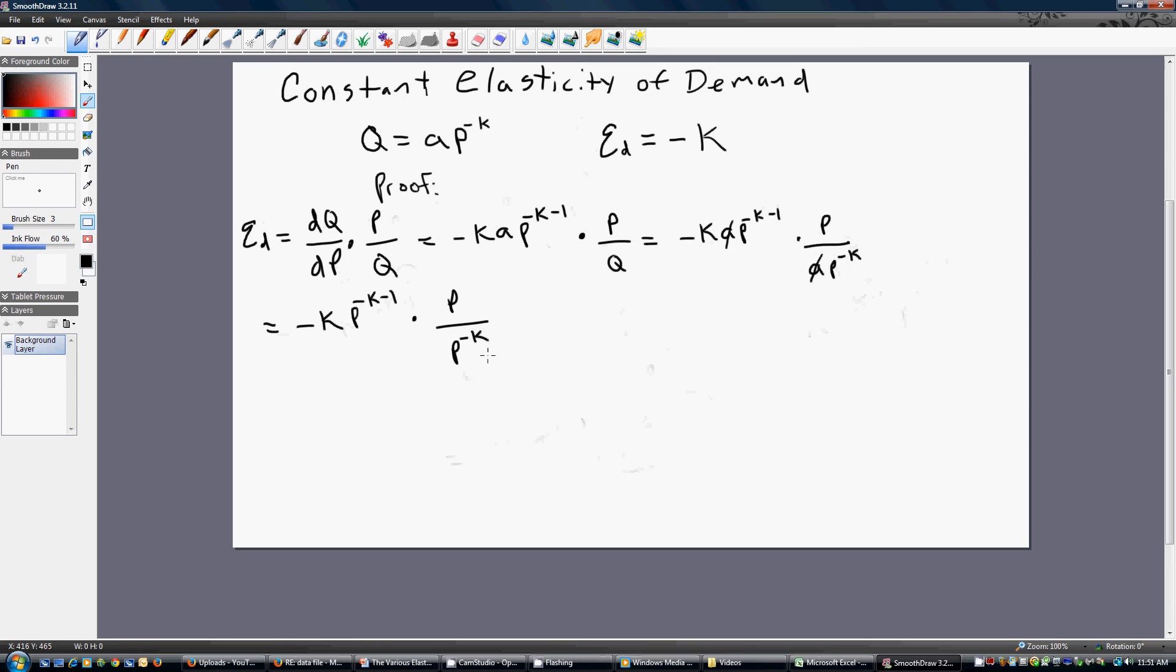What I'll do next is I'll use the rules of exponents to bring this P term in the denominator up into the numerator. So this minus K now in the numerator is just K. Collecting some of the P terms. So P times P raised to the power of K is just P raised to the K plus 1 power. And you'll notice that these two P's then will cancel.